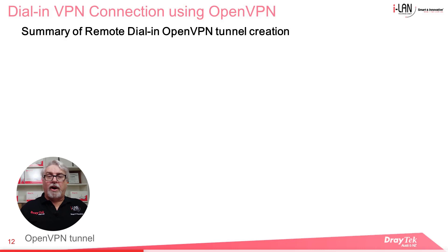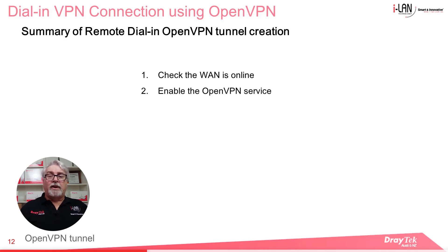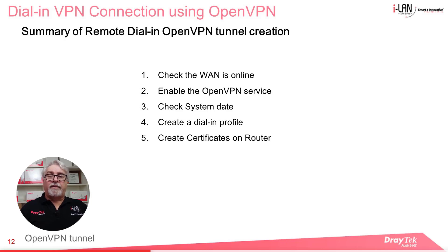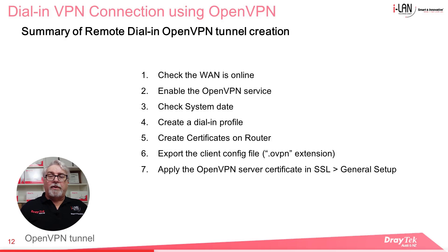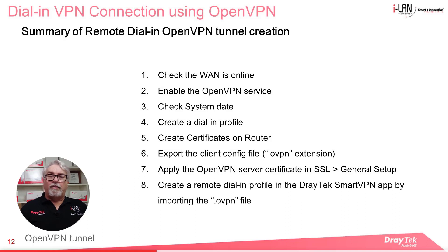Let's look at how to create a dial-in OpenVPN tunnel to a DrayTek router. There are eight general steps: first, check that the WAN you want to use for the VPN is online; enable the OpenVPN service; check system date and time; create a dial-in profile; create certificates on the router; export the client config file with the .ovpn extension; apply the OpenVPN service certificate in SSL General Setup; and finally create a remote dial-in profile by importing the .ovpn file into the DrayTek SmartVPN app.